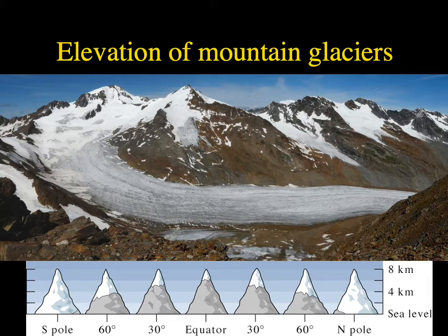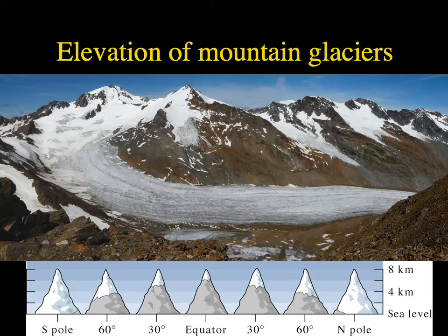The elevation where you can find glaciers changes depending on whether you're at the poles or closer to the equator. At the north and south poles, temperatures at the surface or mountain tops are extremely cold, so glaciers can be found near sea level. As you move toward the equator, average temperatures increase significantly, so you need higher elevations to find glaciers. Even at the equator you can have mountain glaciers — Tanzania's Kilimanjaro has a large glacier sitting on top even though it's about two degrees south of the equator.